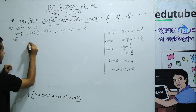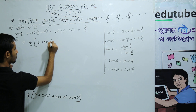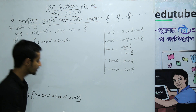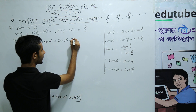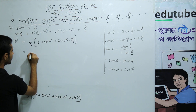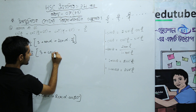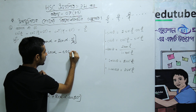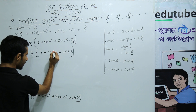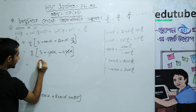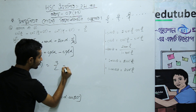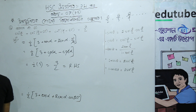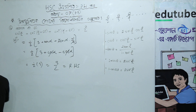So it equals half of 3 plus cos alpha plus 2 cos alpha into cos 120 degrees. Cos 120 degrees equals minus one half, so 2 cos alpha times minus half equals minus cos alpha. Therefore: half of (3 plus cos alpha minus cos alpha), which is half of 3, equals 3 by 2. Right hand side equals 3 by 2. Problem solved.